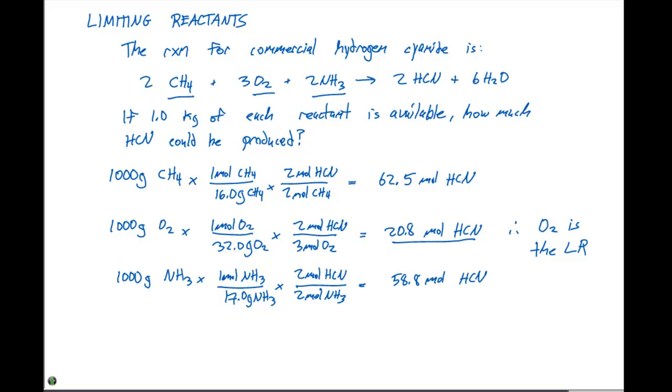So, we've already calculated the moles of HCN produced from 1,000 grams of oxygen. So, now we just need to convert this over to grams, because 20.8 moles of HCN will be produced. From the periodic table, 1 mole of HCN is going to be 27.0 grams. When we do that conversion, we get 5.6 times 10 to the second grams of HCN.